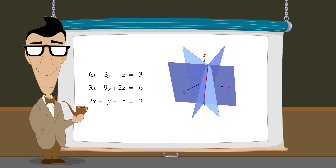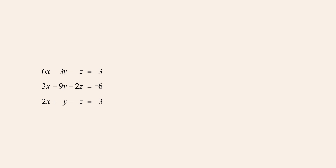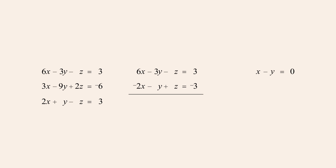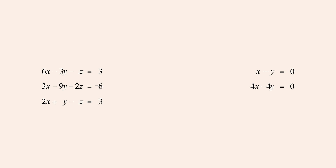So let's see what happens when we solve this system of equations. Since the first and second equations are the same as the last example, using these equations to eliminate z produces the same equation in x and y as before. Now using the first and third equations to produce another equation in x and y, we multiply the second equation by negative one before adding to eliminate the z terms. Adding the equations gives us four x minus four y equals zero, or dividing by four, x minus y equals zero.